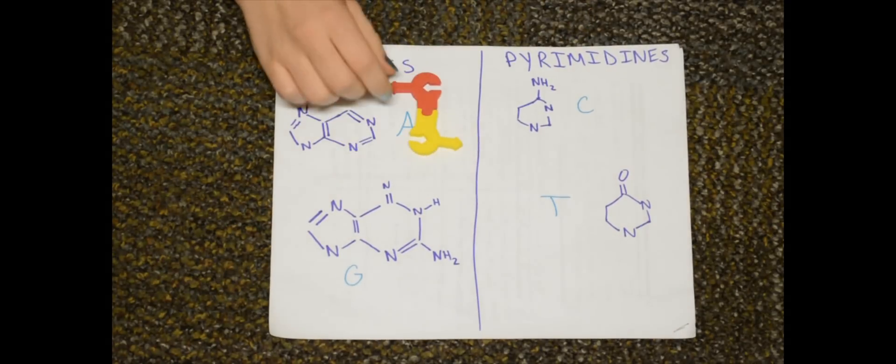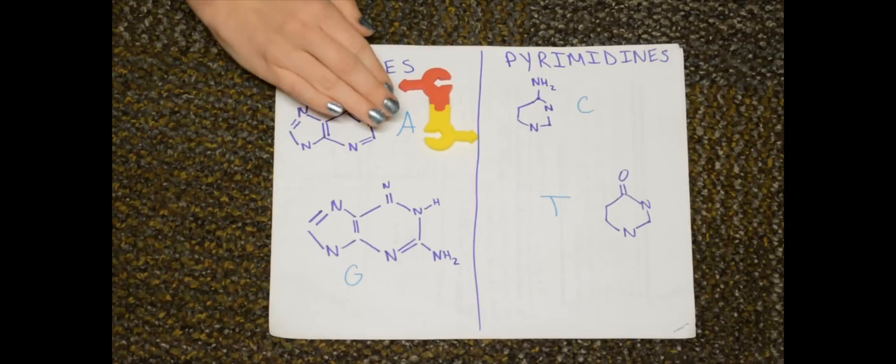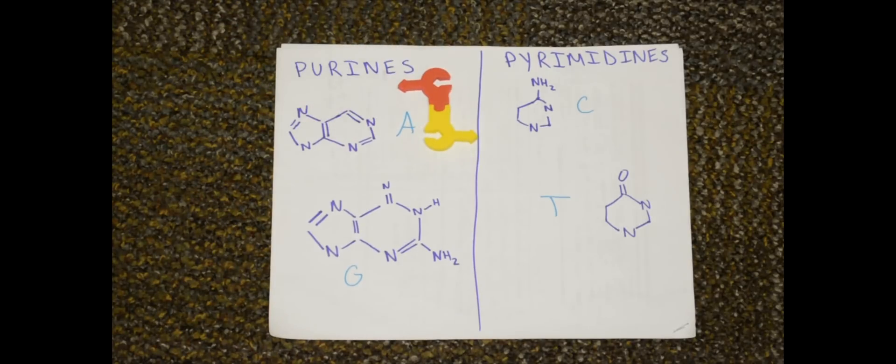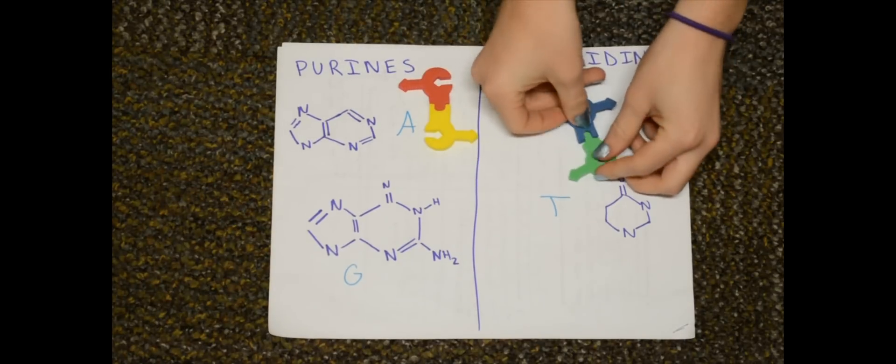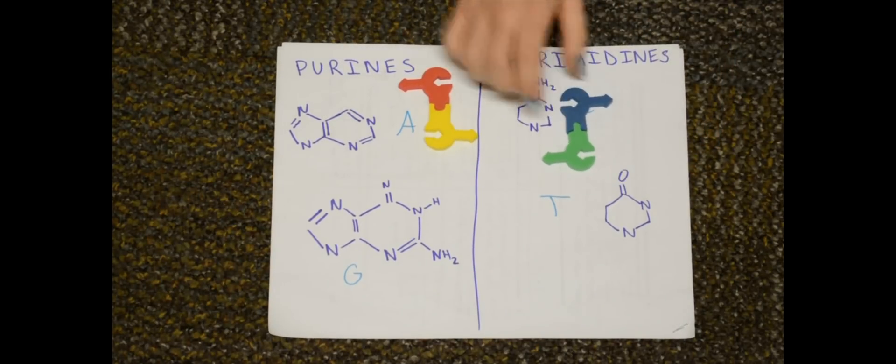So when you have these two together, they have three hydrogen bonds between them. And when you bond the thymine and the guanine, they bond like this and they have two hydrogen bonds between them. That's how they pair together.